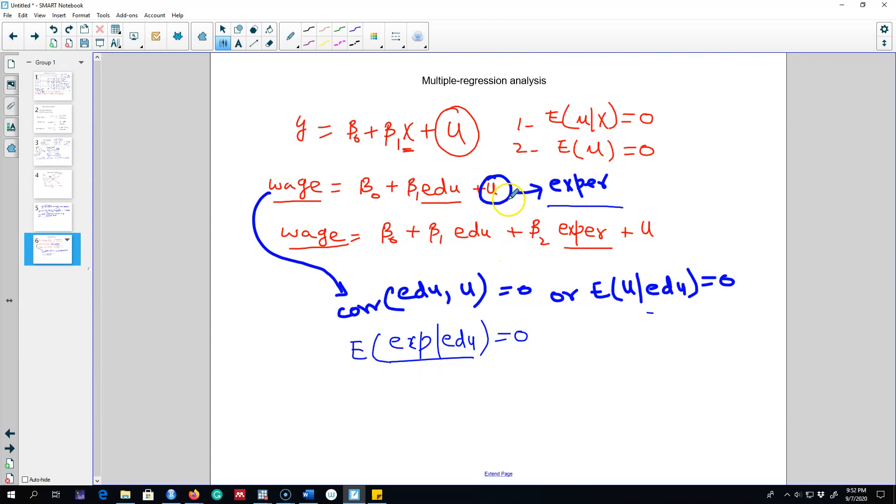Later we'll see that if we do not take care of this problem, our estimated effects will not be equal to the actual effects. So essentially we were interested in this coefficient beta 1, but this assumption that we made makes no sense here.